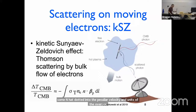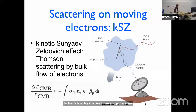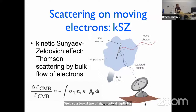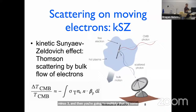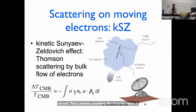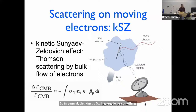Putting in some numbers: a typical line-of-sight optical depth for something like a group of galaxies is about 10^{-3} of the photons getting Thomson scattered. A typical velocity in the universe is hundreds of kilometers per second, which is another factor of about 10^{-3}. So you end up at somewhere around 10^{-6}. In general, the kinetic SZ is going to be something on the order of a few microkelvin. So that's small, but not tiny.